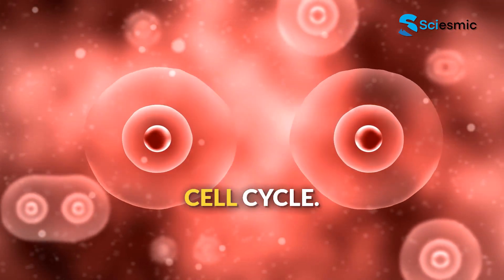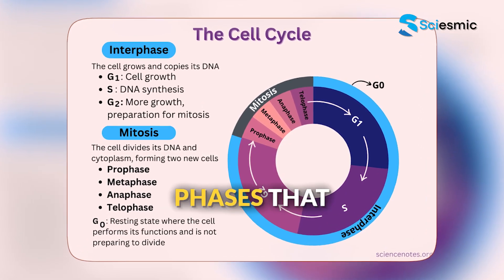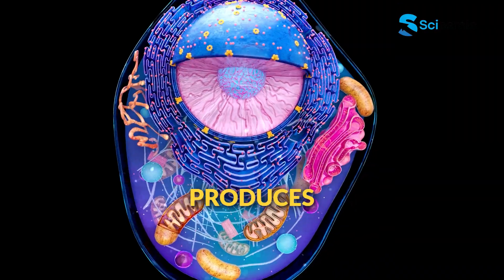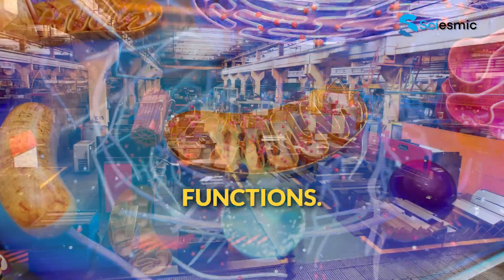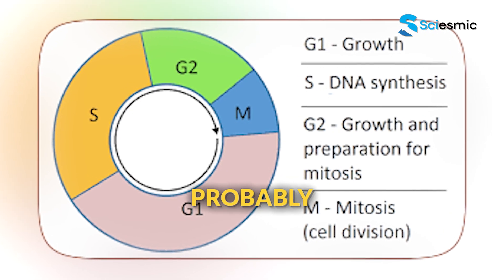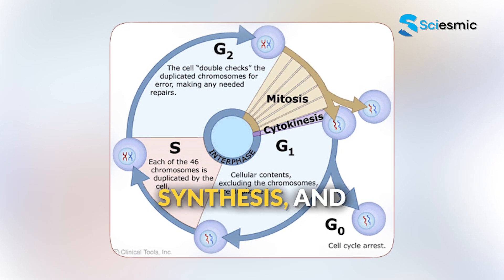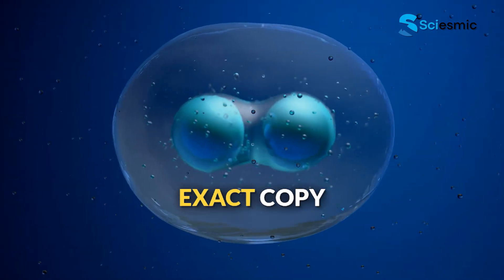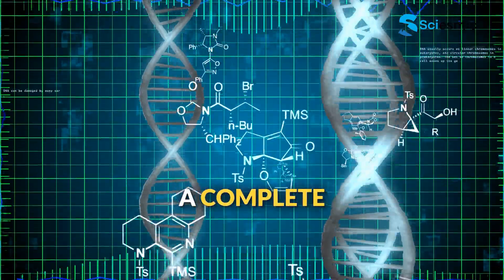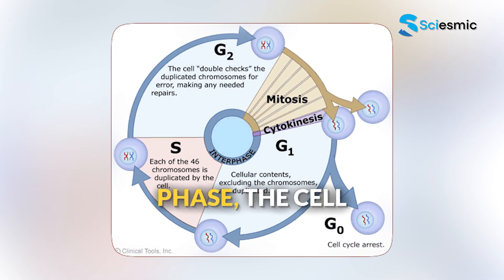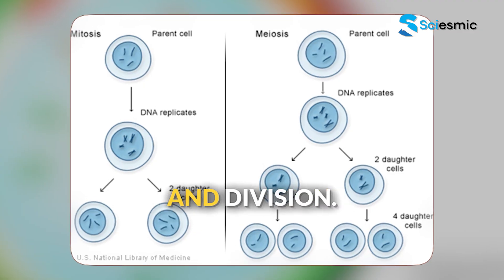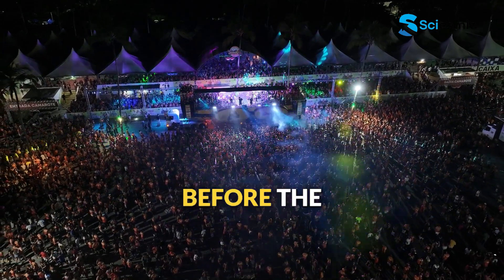Before a cell can divide, it goes through the cell cycle — a carefully orchestrated series of phases that ensure division happens correctly. During G1 phase, the cell grows larger, produces more organelles, and carries out its normal functions — like a factory ramping up production before a major expansion. Then comes S phase, probably the most important part. The S stands for synthesis, and during this phase the cell makes an exact copy of all its DNA. Every chromosome gets duplicated so each new cell will have a complete set of genetic instructions. During G2 phase, the cell continues growing and produces proteins specifically needed for chromosome condensation and division — final preparations before the big event.